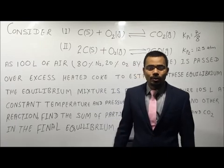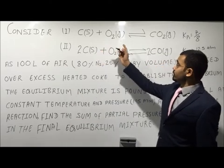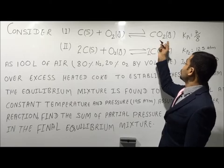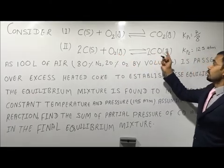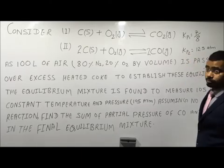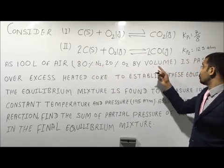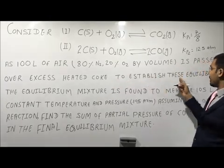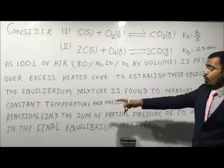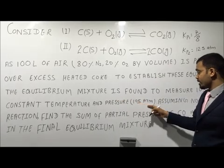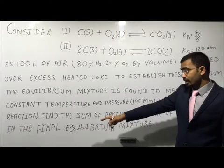Hello everyone. I am going to solve a doubt asked by Naman from Mumbai, India. The question is: consider the given reactions. Carbon solid reacts with O₂ to give CO₂, with Kp1 = 7/8. Carbon solid reacts with O₂ to give CO gas, with Kp2 = 12.5 atm. 100 liters of air having 80% by volume N₂ and 20% by volume O₂ is passed over excess heated coke to establish equilibrium. The equilibrium mixture measures 105 liters at constant temperature and pressure of 105 atm. Assuming no other reactions, find the sum of partial pressures of CO and CO₂ in the final equilibrium mixture.